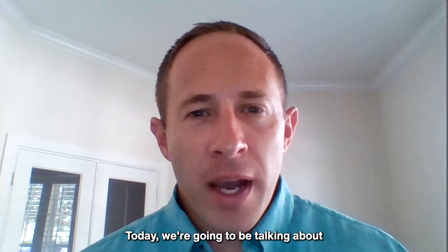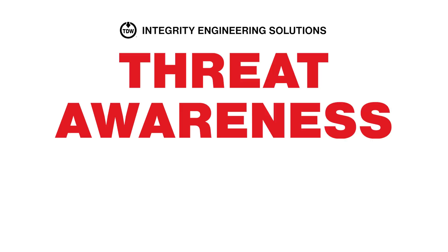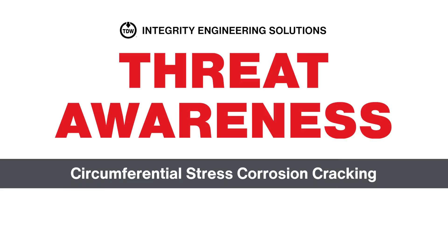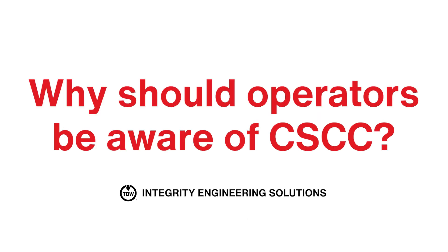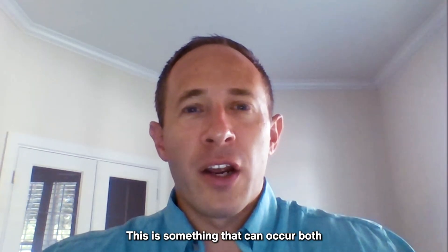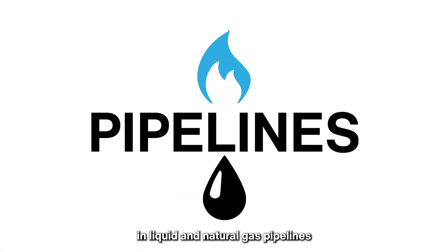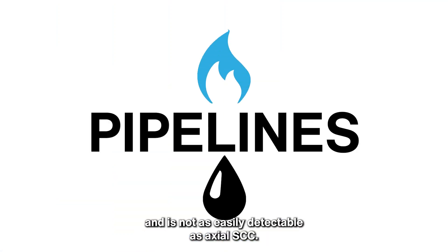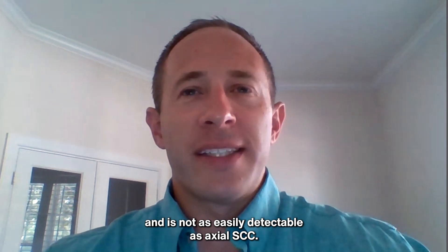Today, we're going to be talking about circumferential stress corrosion cracking, or CSCC. This is something that can occur both in liquid and natural gas pipelines. It is not as easily detectable as axial SCC.